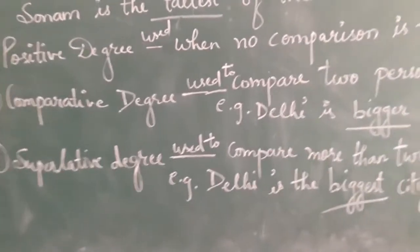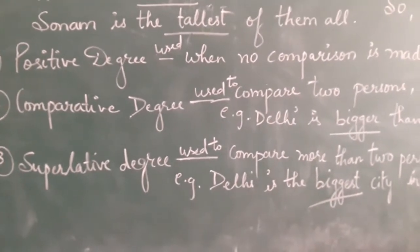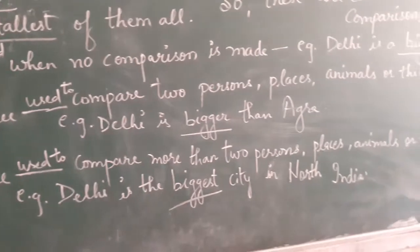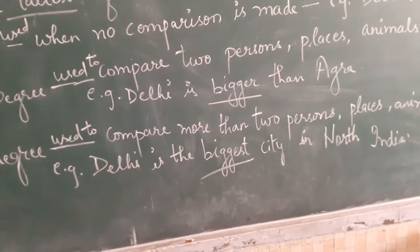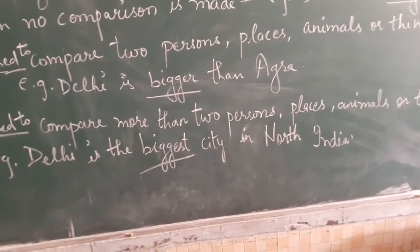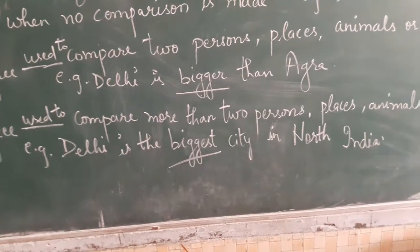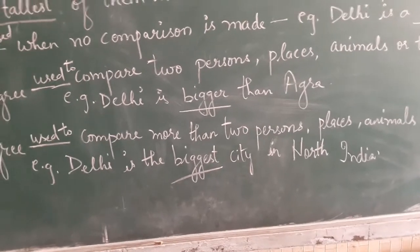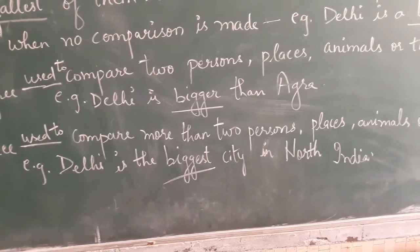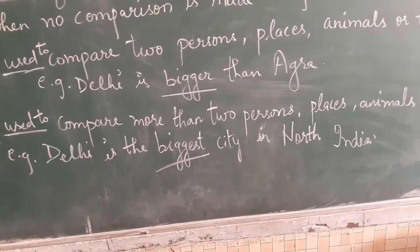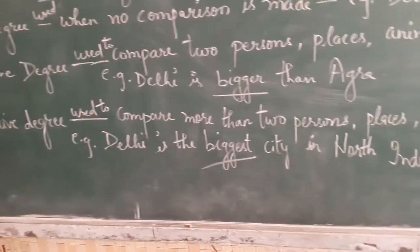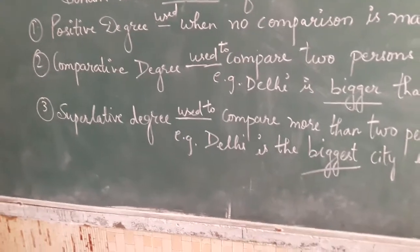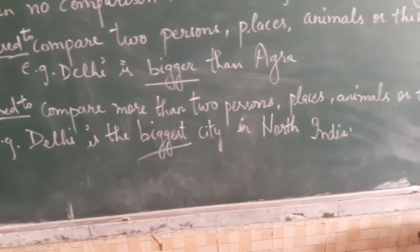Comparative degree is used to compare two persons, places, animals, or things. For example: Delhi is bigger than Agra. Here two cities, Delhi and Agra, are taken and comparison is made between them. So this is an example of comparative degree.